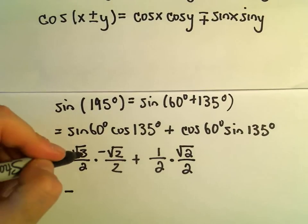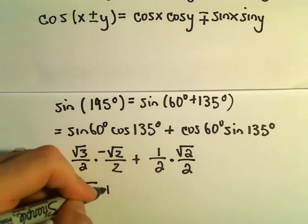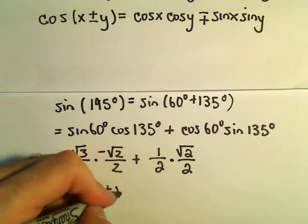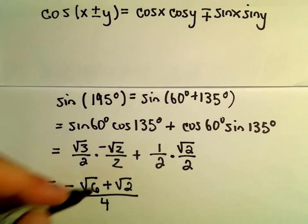If we multiply, we'll get negative. Square root of 3 times square root of 2, we can write that as √6. 1 times √2 is simply √2. We would have our common denominator of 2 times 2, which is 4.